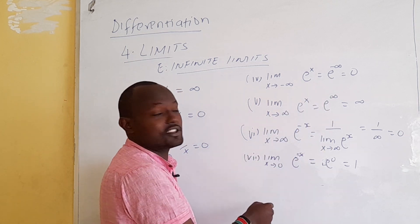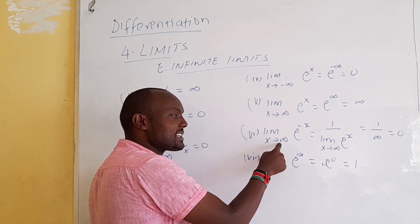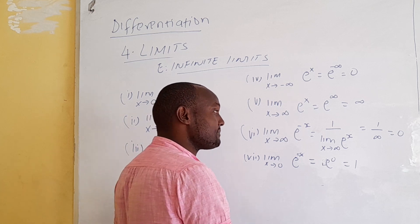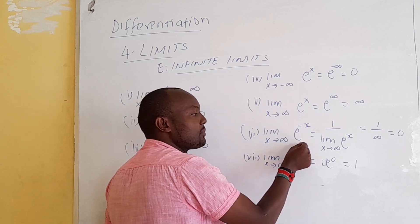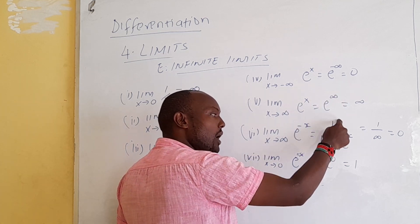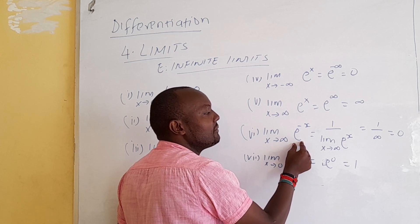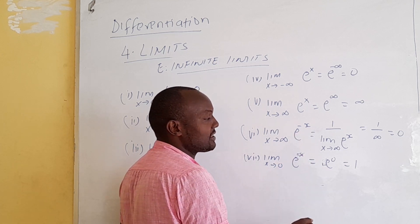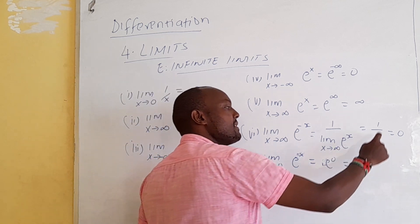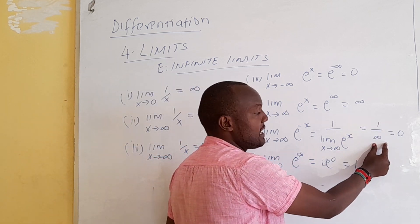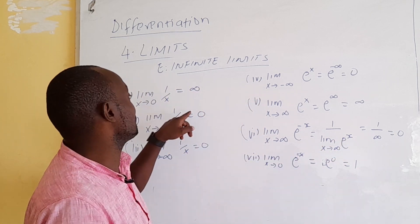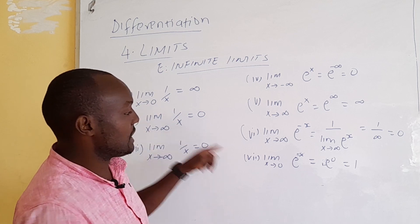This can be explained further with this example. We have the limit as x approaches infinity of e to the power of negative x. This is the same as e to the power of negative infinity. That is the same as 1 over e to the power of infinity, because a number raised to a negative power equals 1 over that number. So 1 divided by a very big number gives you 0.